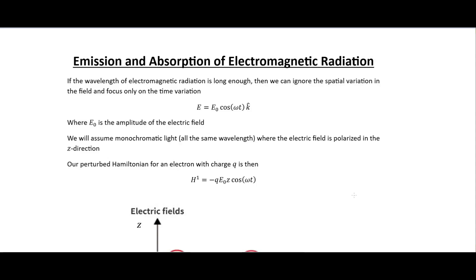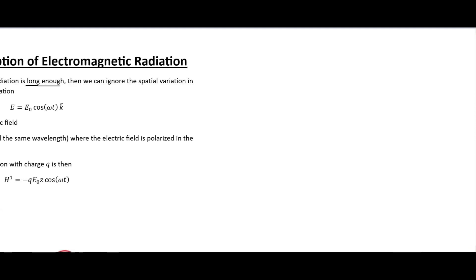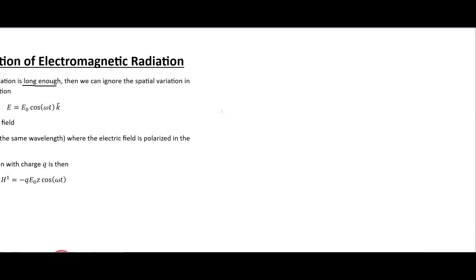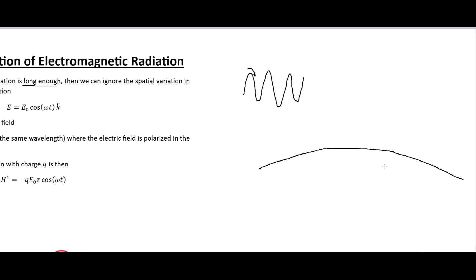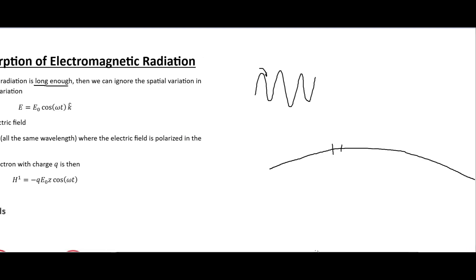In this video we're going to look at a sinusoidal perturbation of the potential to examine the emission and absorption of electromagnetic radiation. If the wavelength of electromagnetic radiation is long enough, we can ignore the spatial variation in the field and focus only on the time variation. If you think of a wave with a very long wavelength, focusing in on a small part of it shows not very much variation in space.